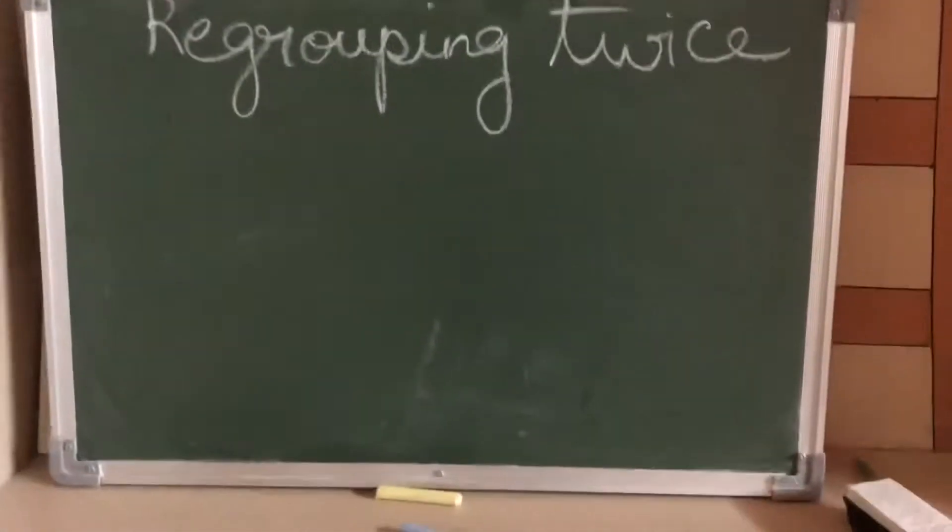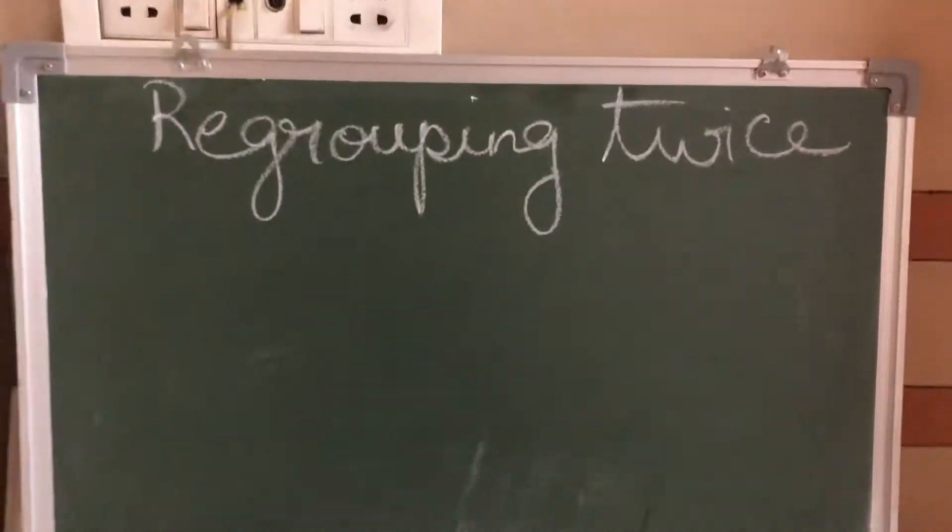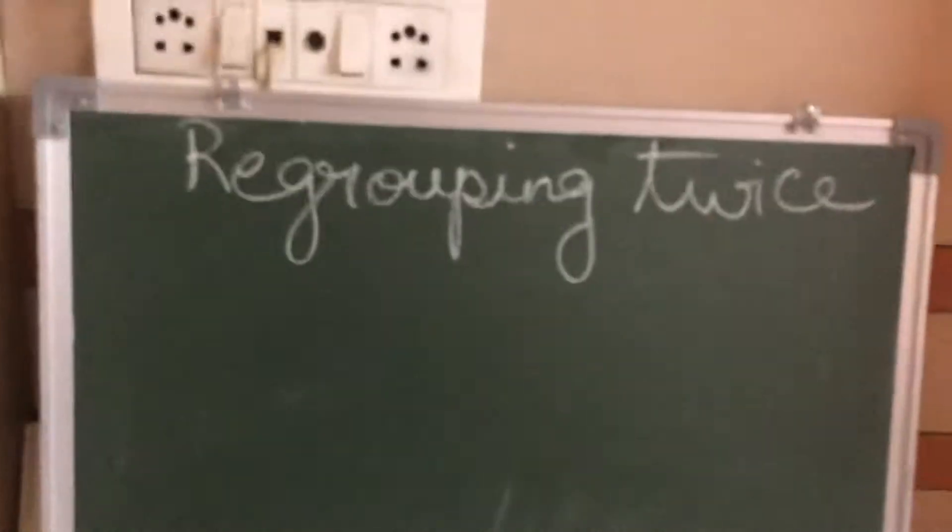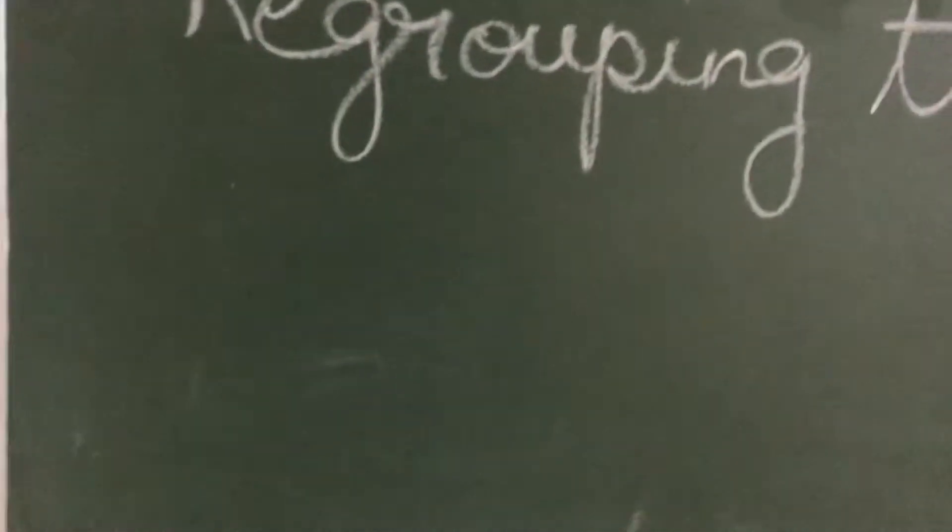Now children, in the last addition chapter we have already done regrouping. You all know what is regrouping. Now here a new concept is there: regrouping twice. Let us see what is regrouping twice. We have already seen, we will recapitulate first regrouping sum.